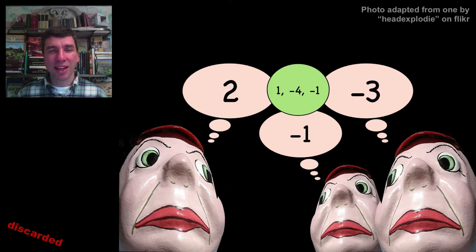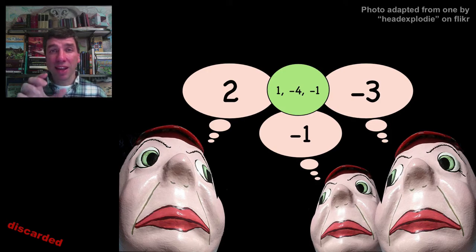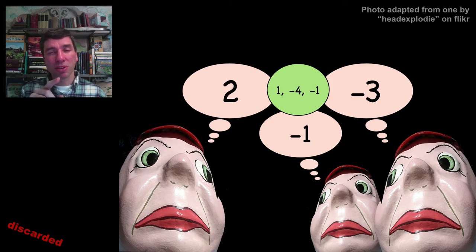Basically, the way it works is that each student secretly thinks of a number. So you have three students at the front of the class that each think of a number. Keep it between negative five and positive five. And then they pairwise get together and add up their numbers. So for example, two plus minus three, that gives minus one. And two plus minus one, that gives plus one.